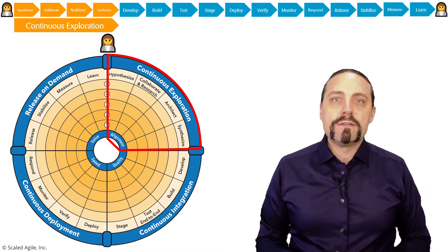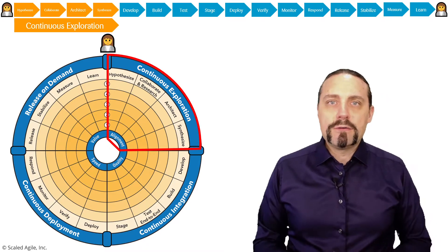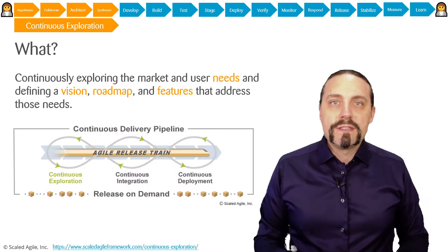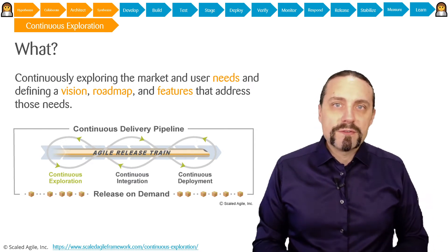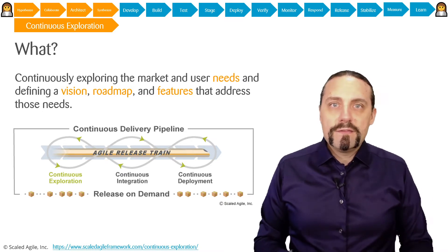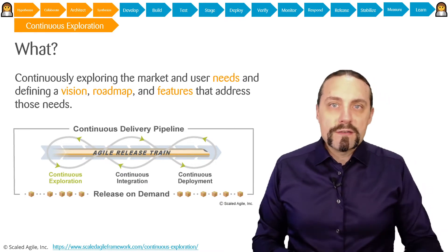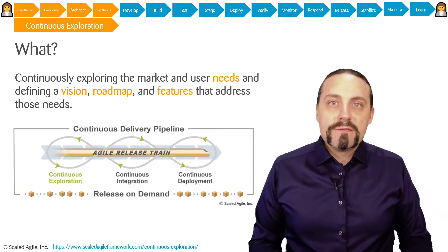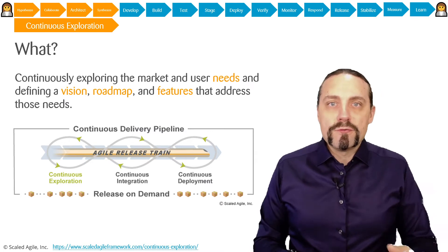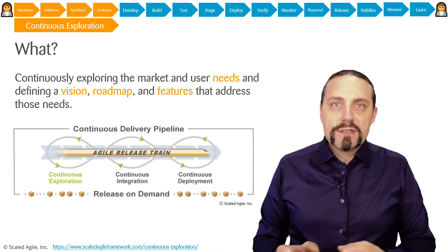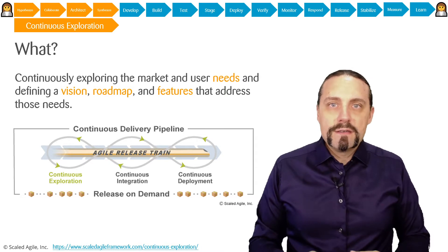Continuous exploration consists of the activities: hypothesize, collaborate and research, and architect and synthesize. In continuous exploration we are getting all of these bright ideas from customer side but also from business side. We transform them into epics with a clear hypothesis statement. Then we do market research on these needs and also customer research — we interview our customers to find out what is really the problem, what their needs are. Then we define a minimal architecture which proves the hypothesis, and we define a vision, a roadmap, and a clear set of features which address the customer needs. This is continuous exploration.